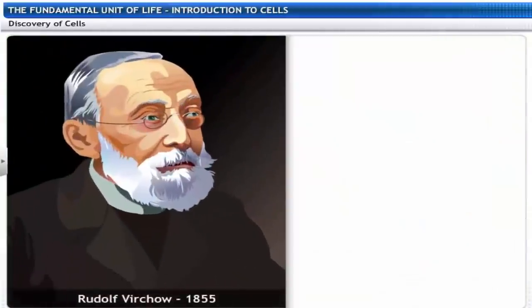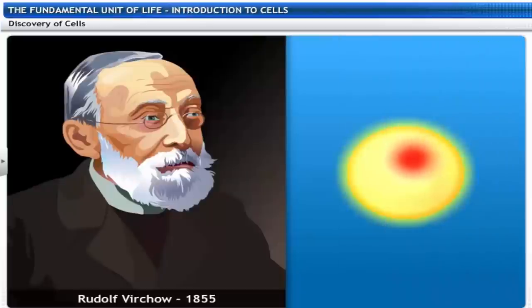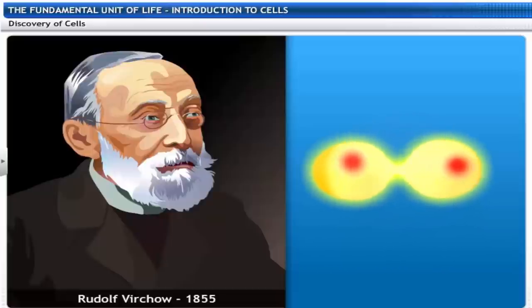Rudolf Virchow, in 1855, further expanded the cell theory by saying omnis cellula e cellula, which means all cells arise from pre-existing cells.